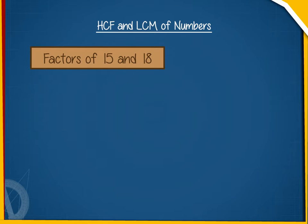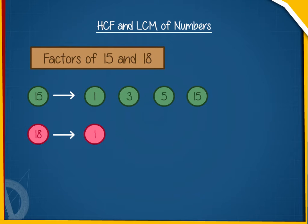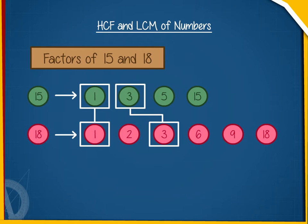The factors of 15 are 1, 3, 5, and 15. The factors of 18 are 1, 2, 3, 6, 9, and 18. Clearly, 1 and 3 are the common factors of 15 and 18. Therefore, the highest common factor of 15 and 18 is 3.